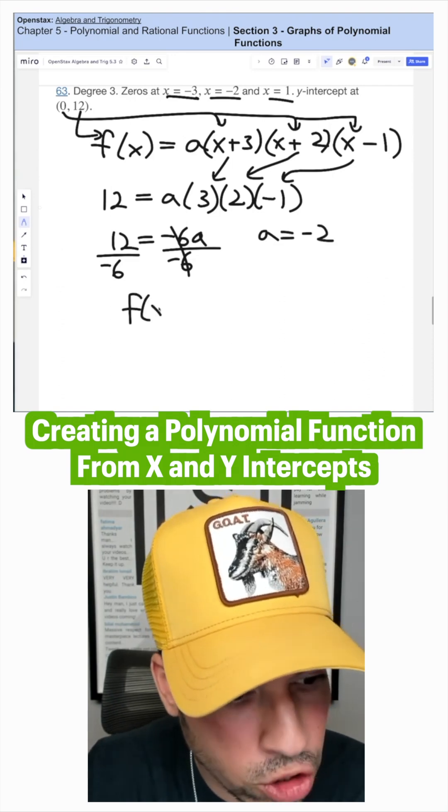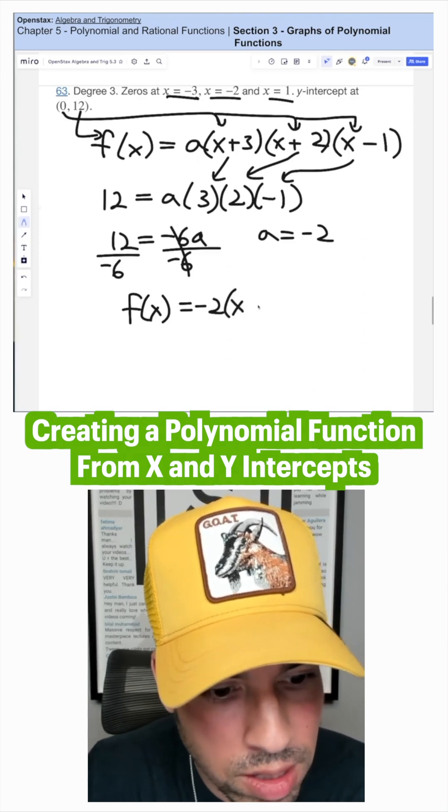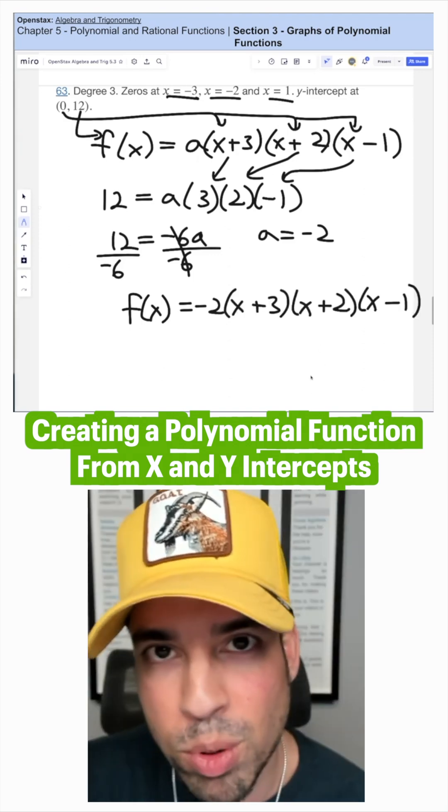The final function has negative two - that's the a value - plugging that in here. Everything else stays the same. And there's your answer.